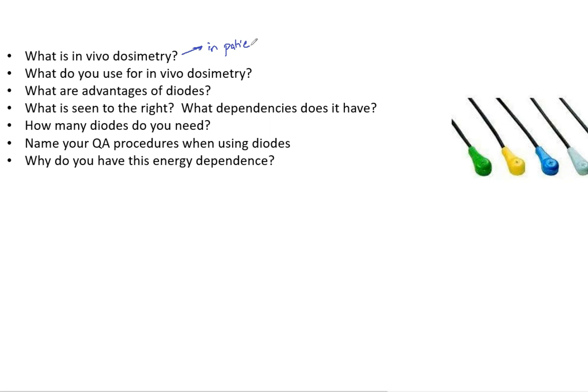So examples of using this are fetal dose, if you are doing a TBI, or if you're using TSE treatments, or even pacemakers. So that's when you would want to use in vivo dosimetry, which is going to be on the outside of patients. I think this is better to say it's on patients, not actually inside patients.